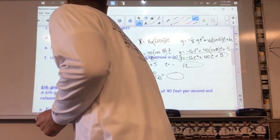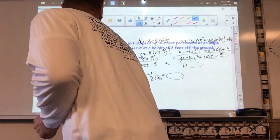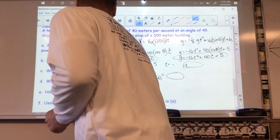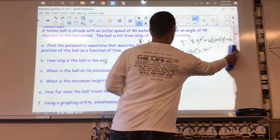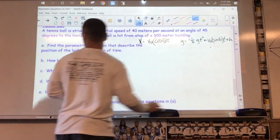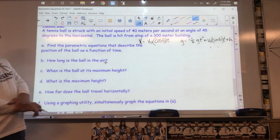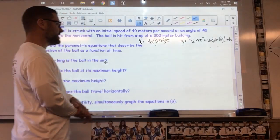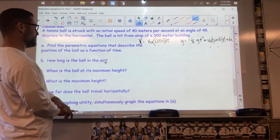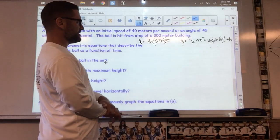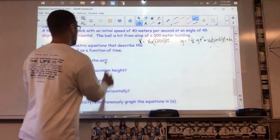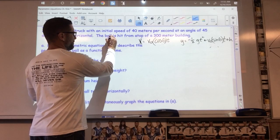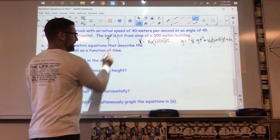Okay, the second one. It says a tennis ball struck with an initial speed of 40 meters per second—meters per second is a different gravitational constant—at an angle of 45 degrees of the horizontal. The ball's hit from the top of a 300 meter building. Holy cow. So there's this building up here, this little dude on top of the building hits this ball up at 45 degrees and it's going to travel like that. Somebody at the top of the tower just playing around hitting tennis balls.